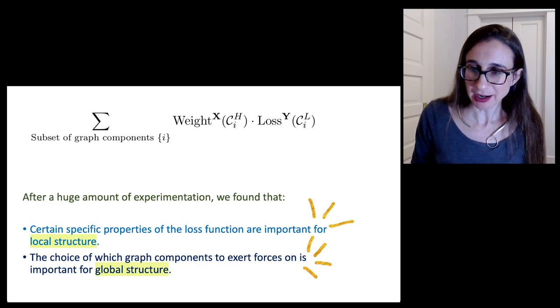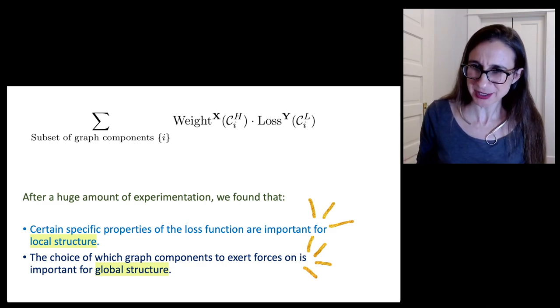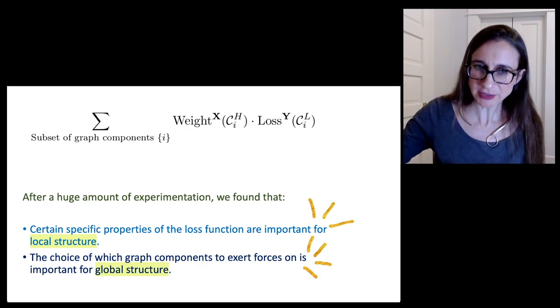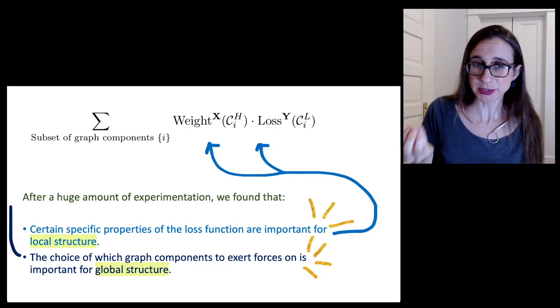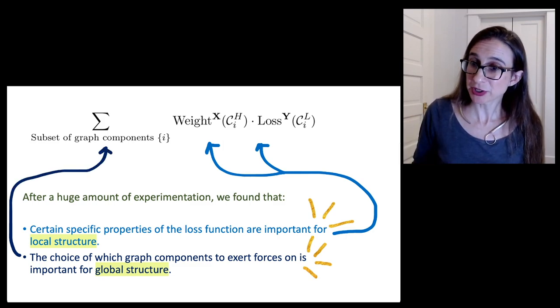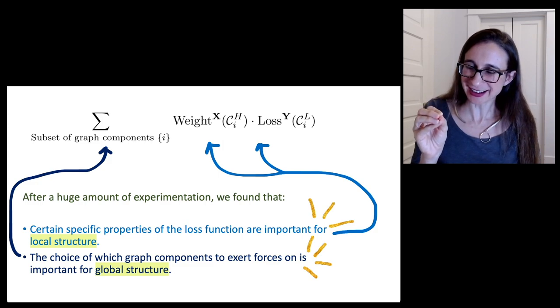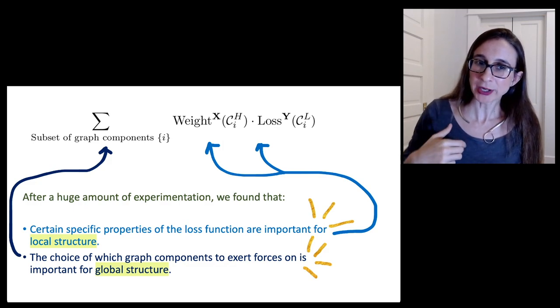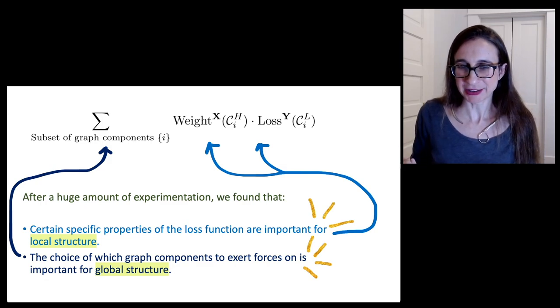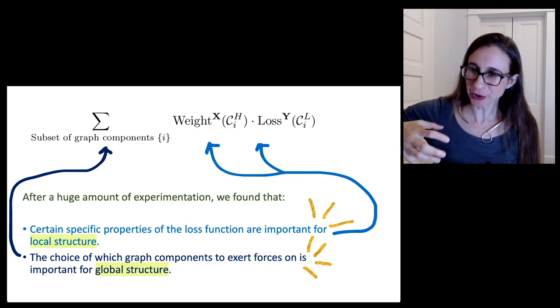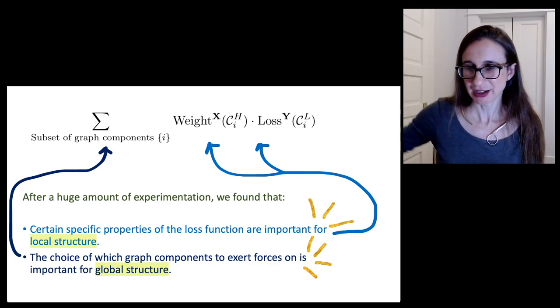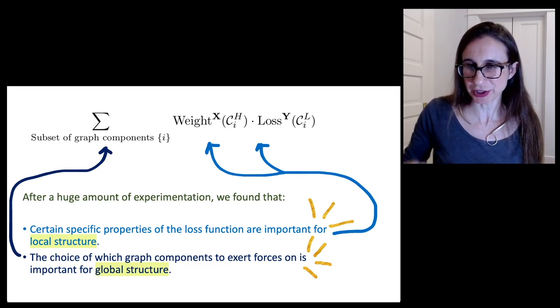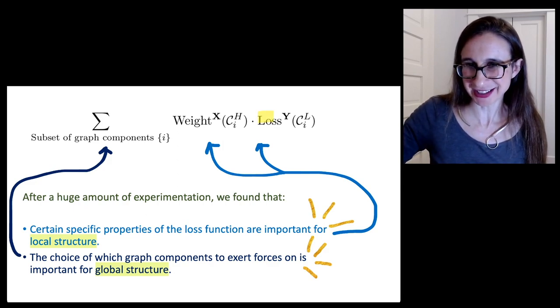We had been playing a lot with different options for dimension reduction techniques. What we found was that there are very specific properties of the loss function, specifically the loss function, that's really important for preserving local structure, like really trying to get the local clusters to be separated from each other. Whereas the choice of what graph components to sum over really matters in terms of preserving the global structure, like the overall placement of structures relative to each other in the overall image. By varying these things, we were able to really understand what drives these algorithms to work and what makes them not work in many cases.